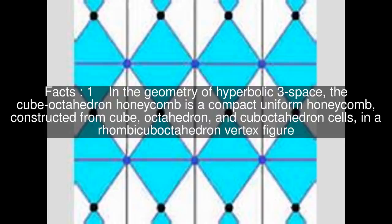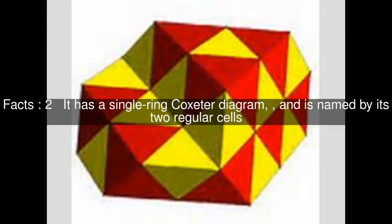In the geometry of hyperbolic 3-space, the cube octahedron honeycomb is a compact uniform honeycomb, constructed from cube, octahedron, and cuboctahedron cells, in a rhombicuboctahedron vertex figure. It has a single-ring Coxeter diagram and is named by its two regular cells.